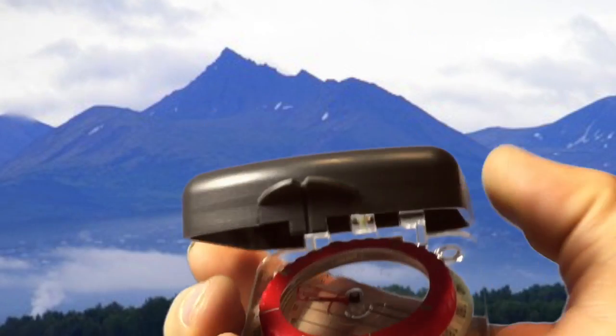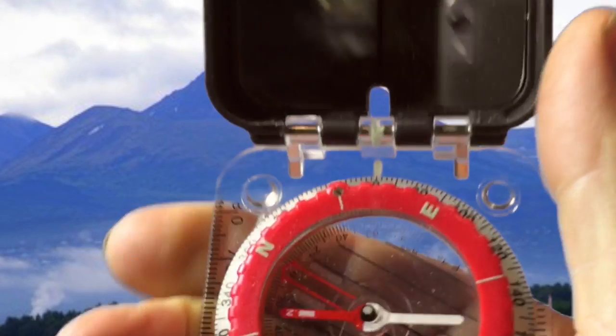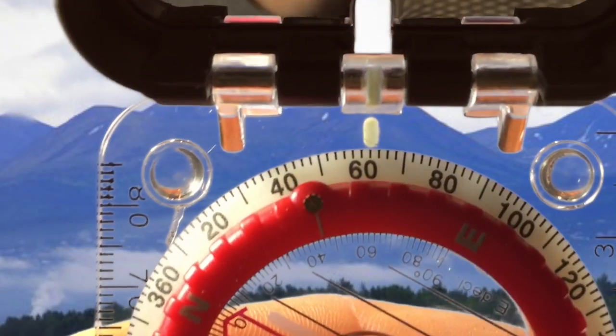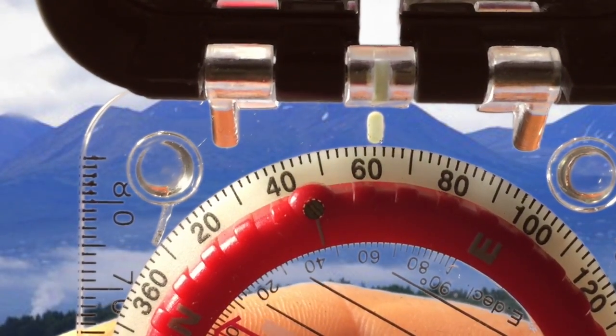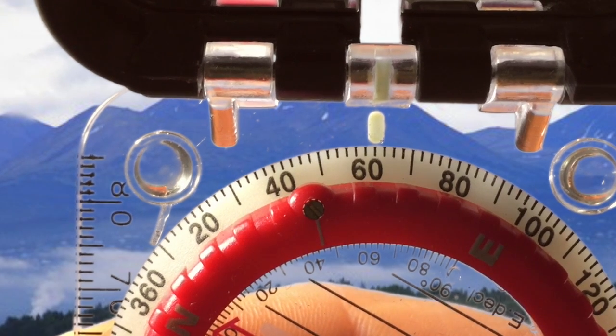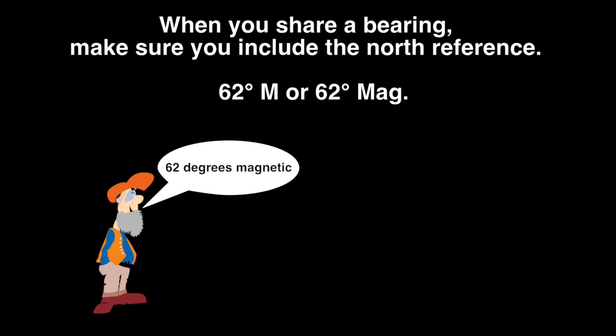You can relax your stance, open the mirror, and hold the compass at a comfortable distance to read the bearing at the index line. When you write the bearing down, follow it with the letter M or the abbreviation MAG to indicate that the angle was measured using magnetic north as the zero degree reference. When you relay the bearing verbally, make sure you say the word MAG following the angle. In our example, we would say 62 degrees MAG.